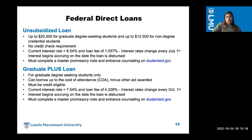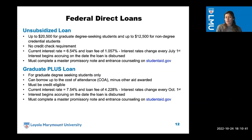The next bucket of money is our federal loans. The first one is our unsubsidized loan — you can receive up to $20,500 for graduate-seeking students and up to $12,500 for non-degree credential students. This loan doesn't require a credit check. Currently our interest rate is 6.54% and our loan fee is 1.057%. Interest rates change every year; interest begins accruing on the date the loan is disbursed. You have to complete a master promissory note and entrance counseling on studentaid.gov.